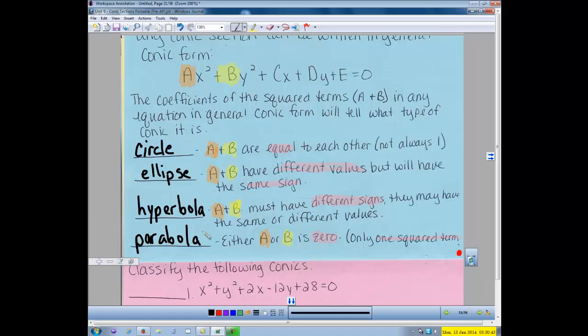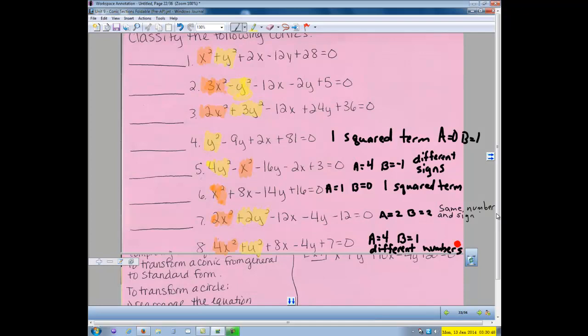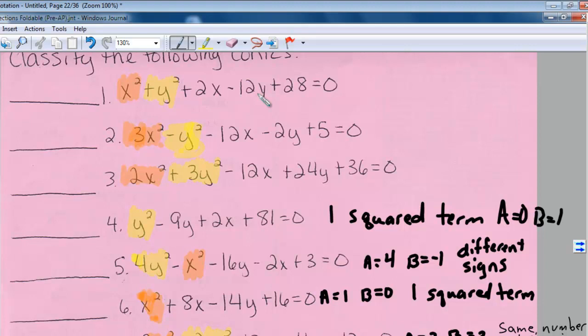Let's look at a few examples. Looking at example one, we have x squared plus y squared plus 2x minus 12y plus 28 equals zero. Notice I only have the x squares and the y squares highlighted, the rest of the information I don't need. I'm just looking at the coefficients a and b. In example one, I have a equals 1 and b equals 1. These are the same values, same sign.